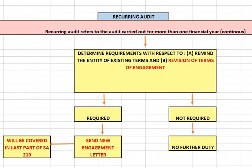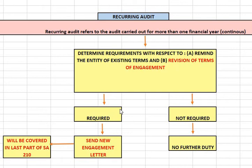If revision is required, then what will we do? The auditor needs to send the entity or client a new engagement letter. This will be covered in a separate discussion in the last part of SA-210. So basically, if the revision of terms is required, then as an auditor, you have to send a new engagement letter.